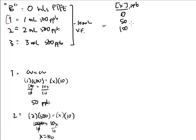Finally, for the third flask: 3 × 500 = 1500 = 10X. Divide each side by 10 and I get 150 ppb. These are the concentrations I would then plot on the x-axis of the standard addition curve.